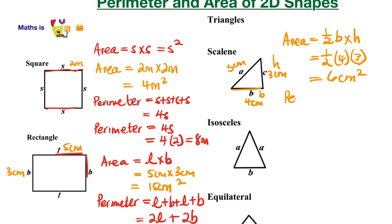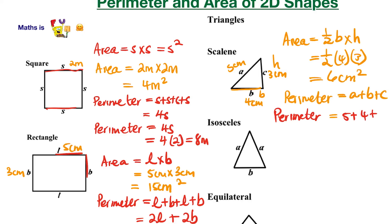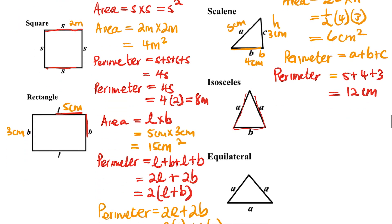The perimeter of the triangle: you add all sides — this side plus this side plus this side — so it's A plus B plus C. With A equal to 5, B equal to 4, and C equal to 3, the perimeter is 12 centimeters. The same approach applies to an isosceles triangle as well.